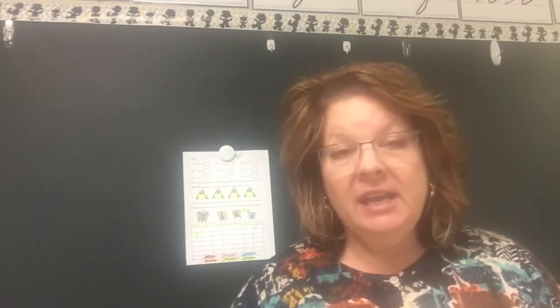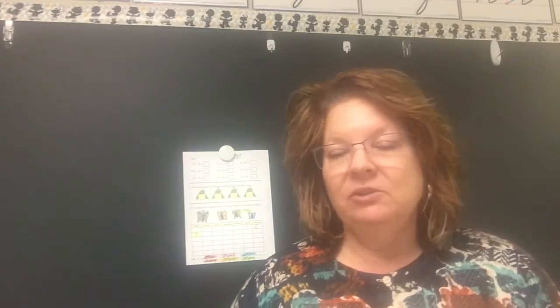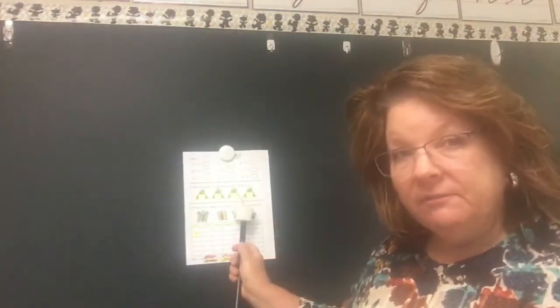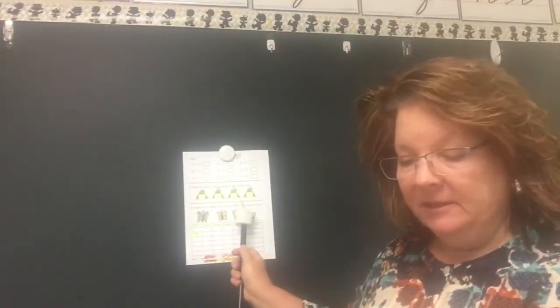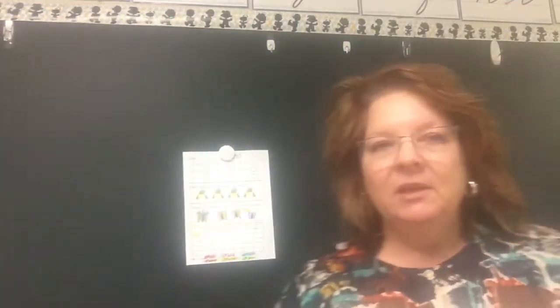On frog number 3: 3 earthworms plus 2 beetles. How many do we have all together if we have 3 earthworms and 2 beetles? You're going to put your answer in the box for frog number 3 — 3 plus 2 equals.